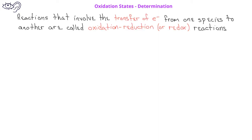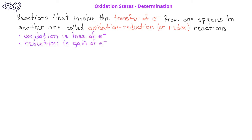Some reactions involve the transfer of electrons from one species to another. These are called oxidation-reduction, or redox reactions, because oxidation is the loss of electrons, while reduction is the gain of electrons. This can be remembered by the phrase OIL RIG, which stands for oxidation is loss and reduction is gain.